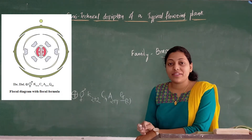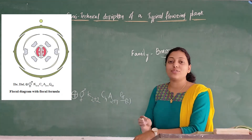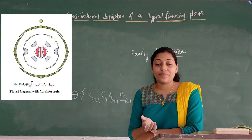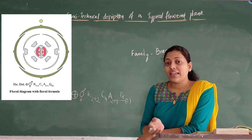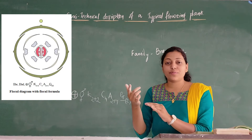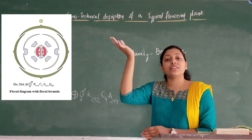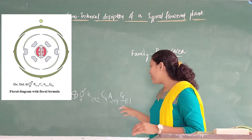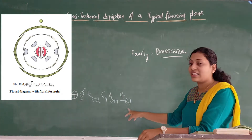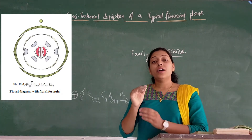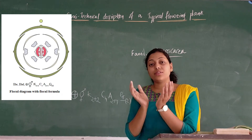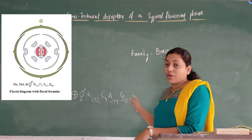Gynoecium is present because it is a bisexual flower — it has both androecium and gynoecium. Androecium has 6 stamens. Gynoecium has an inferior ovary — epigynous condition. In epigynous condition we have 4 different whorls: calyx, corolla, androecium, and gynoecium. All parts — calyx, corolla, androecium — are present upwards, whereas the ovary is present downwards. Ovary is 2 in number but those are fused together — we see fusion of the two carpels.